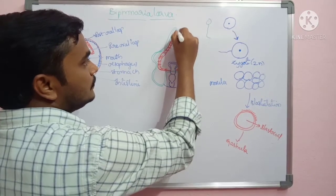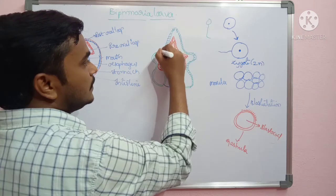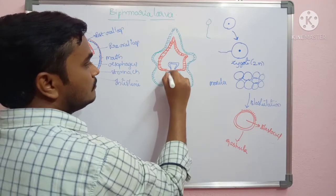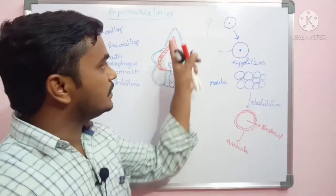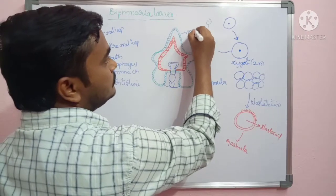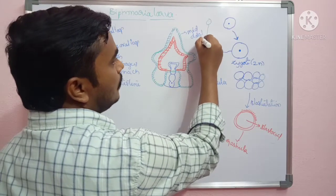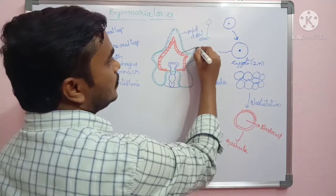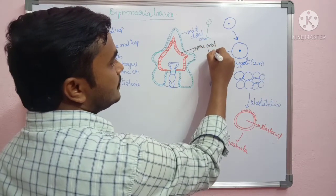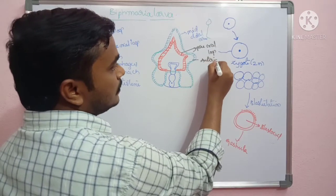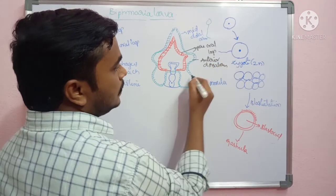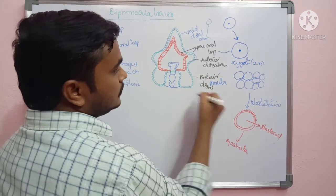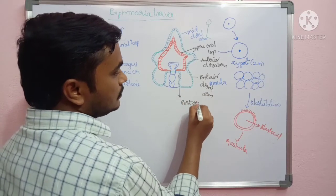This Bipinnaria will turn into Brachiolaria larva later. It is the primary larval stage for the echinoderms. There is a mid-dorsal arm present in this region, then the pre-oral loop, and this is the anterior dorsal arm. This is the posterior dorsal arm. Then this is the post-oral loop.